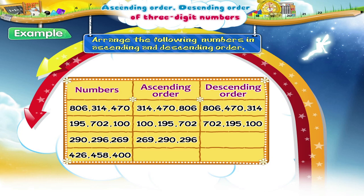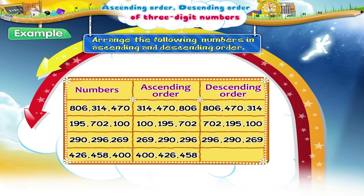And the descending order is 296, 290 and 269. For the last set of numbers, the ascending order is 400, 426 and 458. And the descending order is 458, 426 and 400.